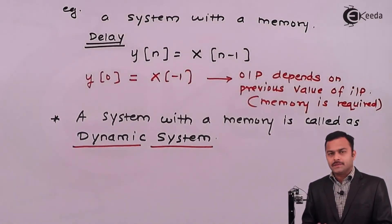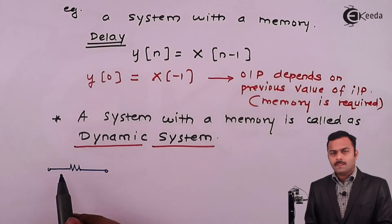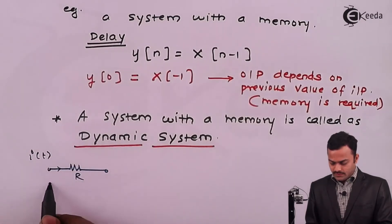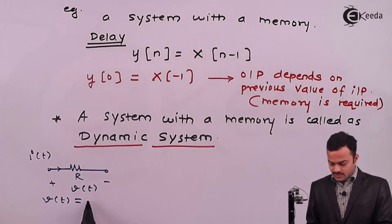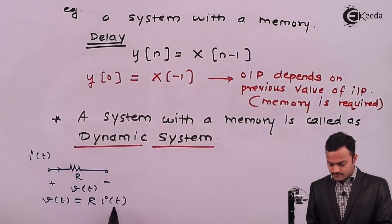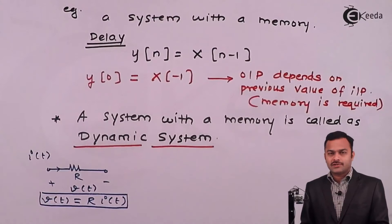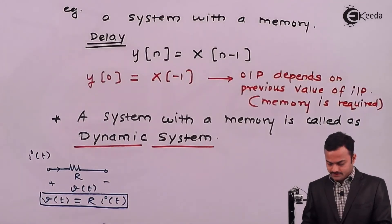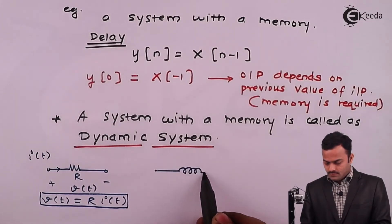Let's take an example in a continuous time domain. I will take an example of a resistor. For the resistor I am having a current I(t) so that it will give a voltage V(t). I can say V(t) is a system with equation R into I(t). At any instant of time t, if I want to know the voltage across the resistor, I just need to know what is the current flowing through the resistor at that particular instant.